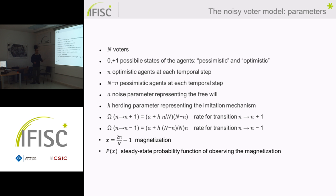The dynamics is described by the global transition rates of the system. The rate for the transition from n to n+1 — an increase in optimistic agents — and the rate for the transition from n to n−1 — an increase in pessimistic agents — are respectively proportional to the number of optimistic and pessimistic agents. This is intuitive because non-contrarian agents copy the state of the already-optimistic agents when transitioning to optimistic, and the opposite for pessimistic agents.